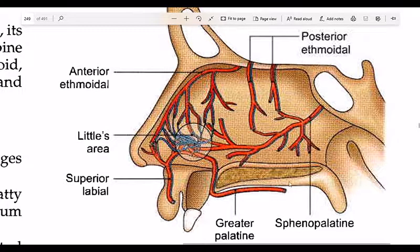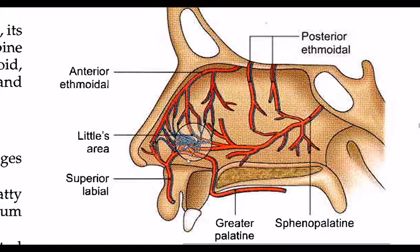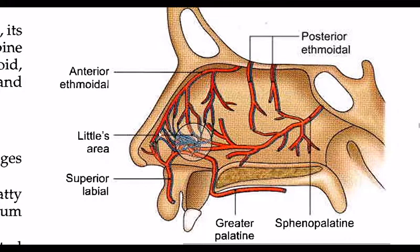The greater palatine artery also supplies the septum. The sphenopalatine and greater palatine arteries anastomose in an area called Kiesselbach's plexus. This plexus area is the most common site of damage leading to epistaxis, also known as Little's area.